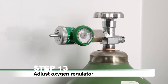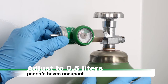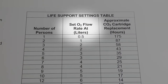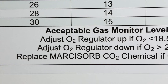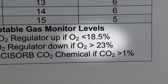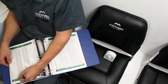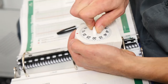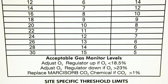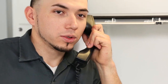Step 13: Adjust Oxygen Regulator. Adjust the oxygen regulator to 0.5 liters per safe haven occupant, rounding up to the nearest flow rate marked on the regulator. For further information on oxygen flow rates, refer to the life support settings table on the safe haven wall. If an automated oxygen delivery system is installed, the oxygen concentration will automatically be maintained between 18.5% and 23%. Remove PPE and store underneath seats. Remain calm and record gas levels hourly on the gas level recording charts located at the rear of the photographic operating procedures. A marker and timer can be found in the storage container. If internal air reaches the site-specific threshold limits specified on the life support settings table, contact the emergency incident commander for further instructions.